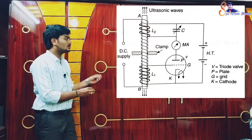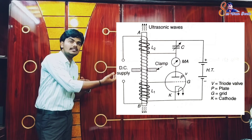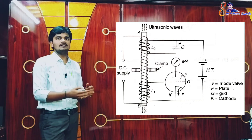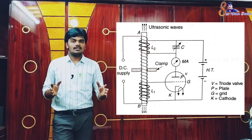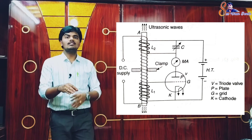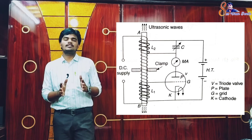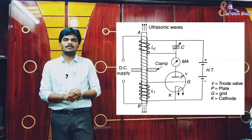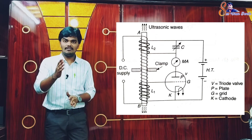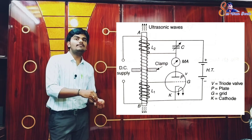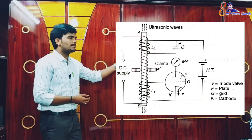When the plate current passing through coil L2 changes, it causes a corresponding change in the magnetization of the rod, and thus a change in the length of the rod. This vibration in the length causes a vibration in the magnetic flux through the grid coil L1, which in turn changes the EMF developed across L1. This EMF acts on the grid.